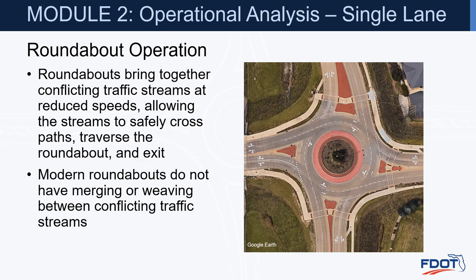Roundabout operations. Roundabouts bring together conflicting traffic streams at reduced speeds, allowing the streams to safely cross paths, traverse the roundabout, and exit. Modern roundabouts do not have merging or weaving between conflicting traffic streams.